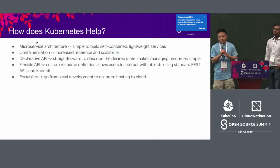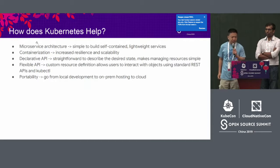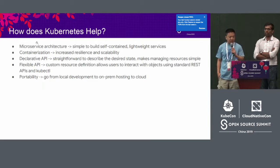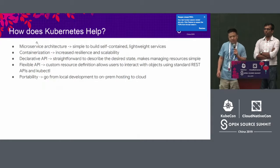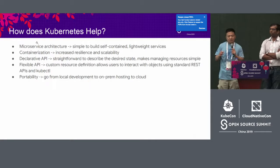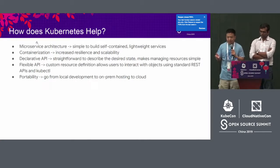How does Kubernetes help us? First, Kubernetes makes it really easy to build microservices — self-contained, lightweight services that do one thing really well. It also makes containerization easy with Docker. This applies well to our model of parallel training jobs: we can containerize jobs, making them very easily scalable.